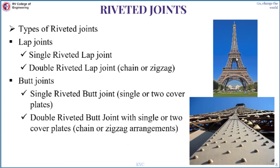Next we will go to the classification of different types of riveted joints. The famous Eiffel Tower has around 2.5 million riveted joints holding 12,000 metallic pieces together — you can appreciate the structural stability that riveting can sustain. Riveting is done after drilling a hole; after drilling the hole, we insert the rivet and do the riveting.